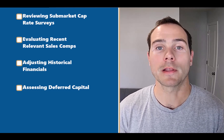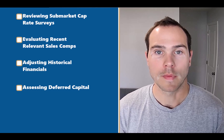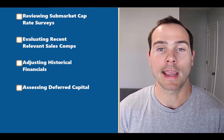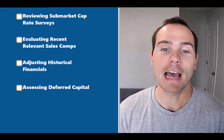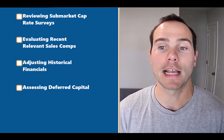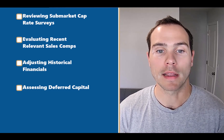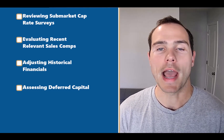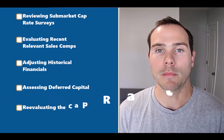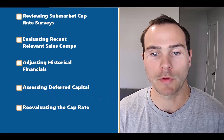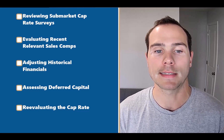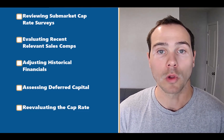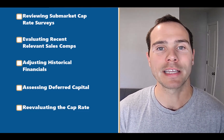The third step is adjusting the historical financials to smooth out any financial anomalies and account for increased property tax liability. Step four would be assessing deferred capital. If a property has a $500,000 NOI and it's selling for $10 million, is it really a five cap if it needs $2 million in deferred capital? I'd argue no. For properties with significant deferred maintenance, it may be better to do a stabilized return on cost calculation and compare that to market cap rates to make sure you're getting a good deal.